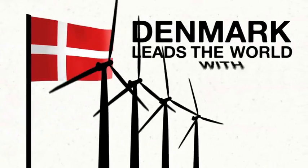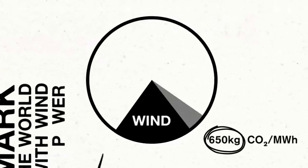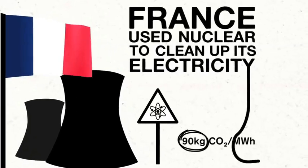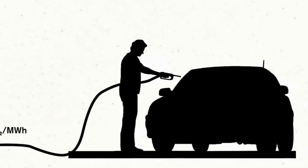Denmark leads the world with wind power, but most Danish electricity still comes from coal. France used nuclear to clean up its electricity supply, but it's still addicted to oil for transport.